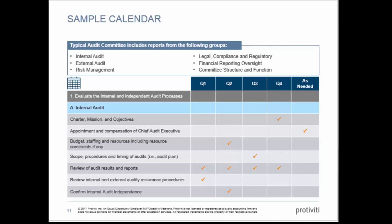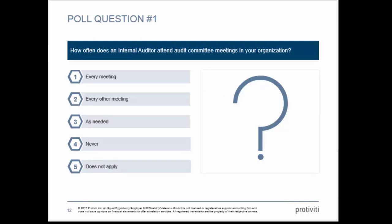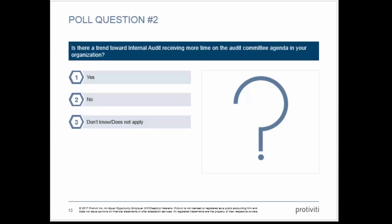We have three poll questions. The first asks: how often does an internal auditor attend audit committee meetings in your organization — every meeting, every other meeting, as needed, never, or does not apply? The second poll question is: is there a trend towards internal audit receiving more time on the audit committee agenda in your organization? It looks like the trend is towards yes — slightly more than no, up to 47% for yes.